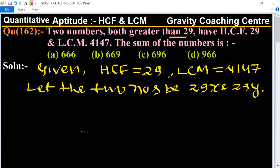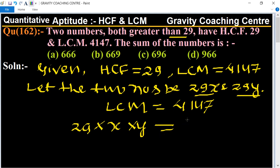And LCM is also given, LCM equal to 4147. And the LCM of 29x and 29y is 29 into x into y equal to 4147.